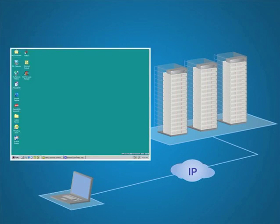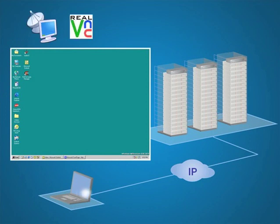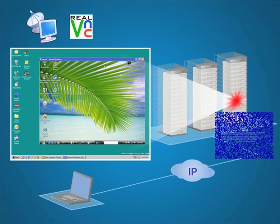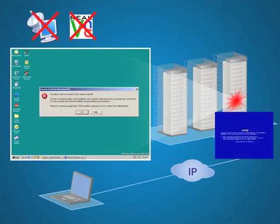Most rely upon software tools like RDP and VNC to provide remote server access, and these can be very effective when operating systems are healthy. But when the blue screen of death occurs, only an agentless hardware solution can come to the rescue.